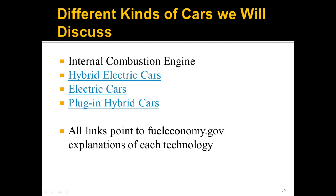Hybrid electric cars run just on gasoline, but they have an onboard battery that recharges via regenerative braking, which can really increase fuel efficiency. All the calculations are going to be the same — they just have a higher fuel efficiency most of the time than internal combustion engine vehicles. Electric cars run fully on electricity with an electric motor and battery. Plug-in hybrids are a little different: they act like electric cars for a while, and once their batteries are drained, they act like hybrid electric cars. The Prius plug-in, which we'll look at, goes 11 miles on all electricity and then has a range of over 400 miles on gasoline. All links are to fueleconomy.gov for more explanation about each car type.